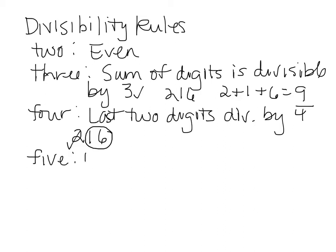5 ends in 0 or 5. For 6, if you know it's divisible by 2 and it's divisible by 3, then it's divisible by 6. So you use two of those rules: divisible by 3 and even.